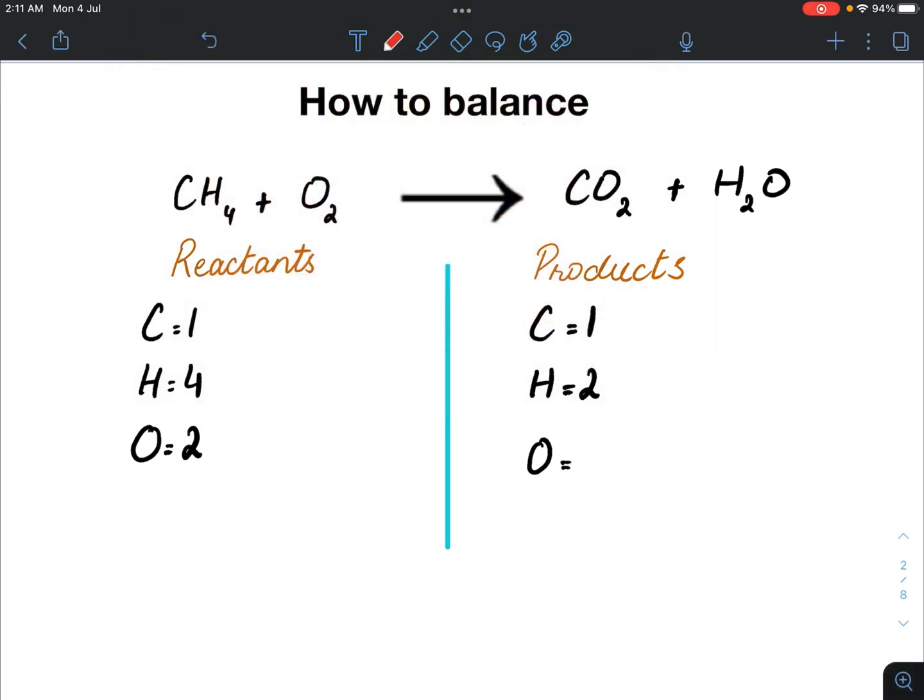If I multiply this hydrogen with a coefficient 2, we get four hydrogen atoms, which balances it with this hydrogen. Let's put our coefficient.